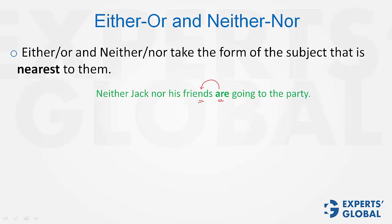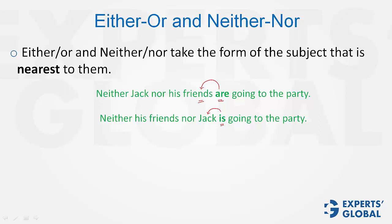If we flip it — if we say 'neither his friends nor Jack' — now the verb has a singular noun closest to it, and therefore the singular form of the verb has been used.